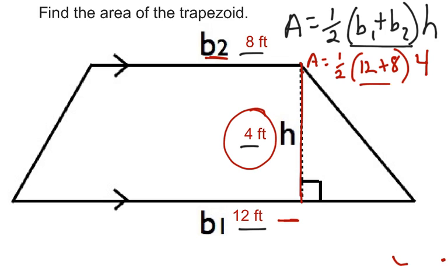So now we have to use our order of operations. Parentheses come first. So I have area equals half of 12 plus 8. Well, 12 plus 8 is 20. And then we still have a height of 4, so multiply by 4.